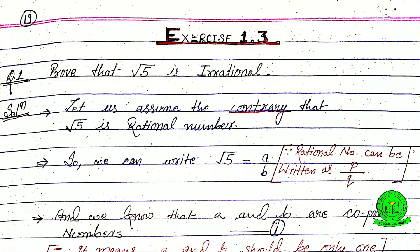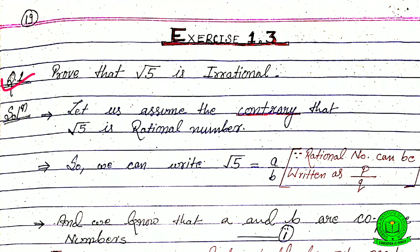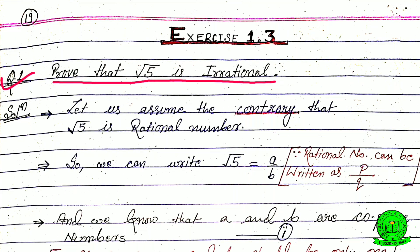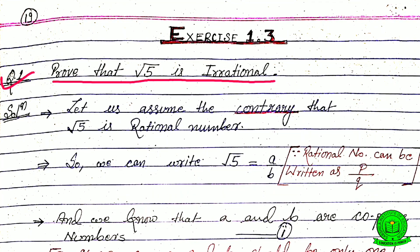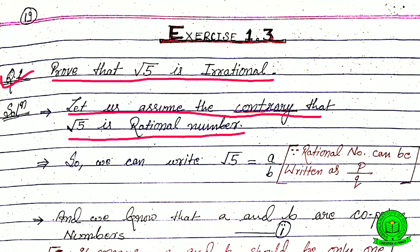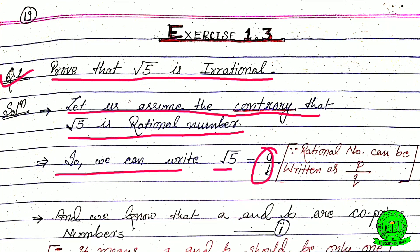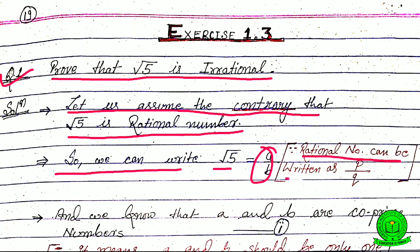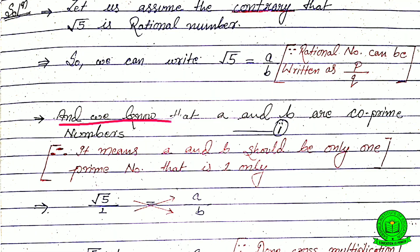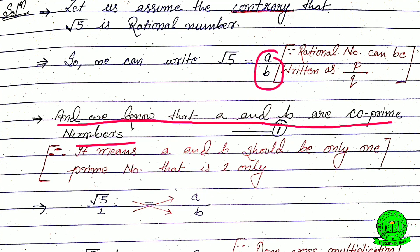Let's start Exercise 1.3. Question number one: prove that root 5 is an irrational number. We have to prove this by the contradiction method. Let us assume the contrary that root 5 is a rational number, so we can write root 5 is equal to a by b, because a rational number can be written in the form of P by Q. Here a and b are co-prime numbers.